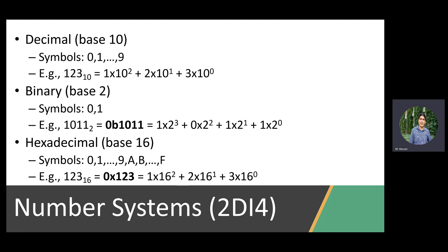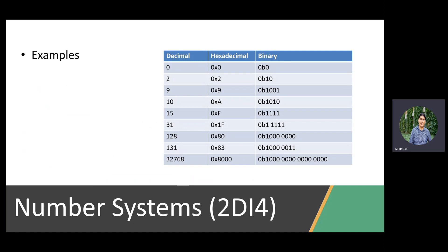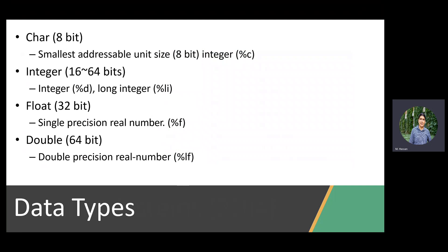Number systems are relevant to software development, especially in embedded systems. You have decimal, which is the human one; binary, which is the machine one; and hexadecimal, which is the representation in between where you encode binary bits into hex digits. Data types are usually covered in any programming language course, but why is understanding data types, their width, and how much memory they consume important for embedded systems? The point emphasized during this lecture is you have very limited resources.